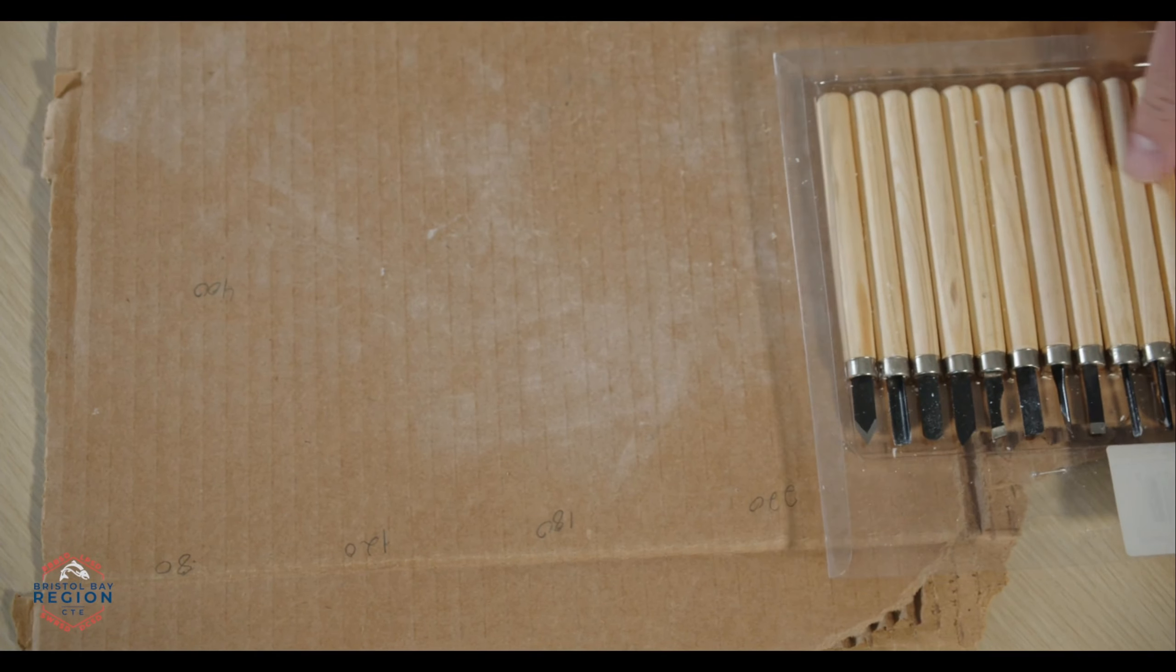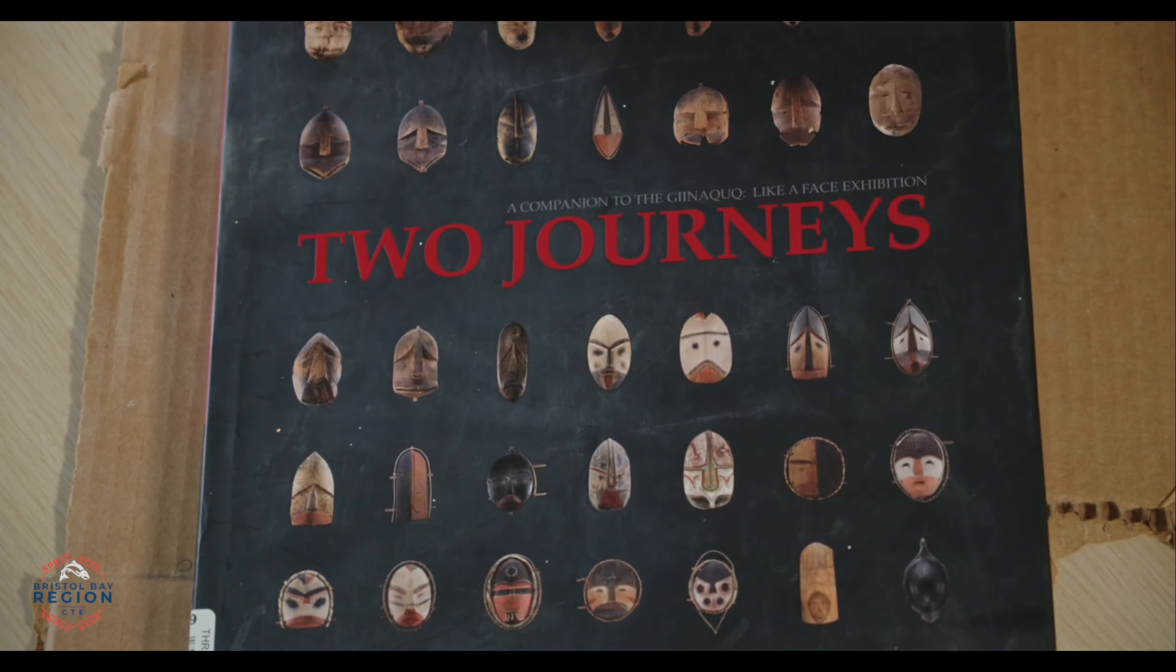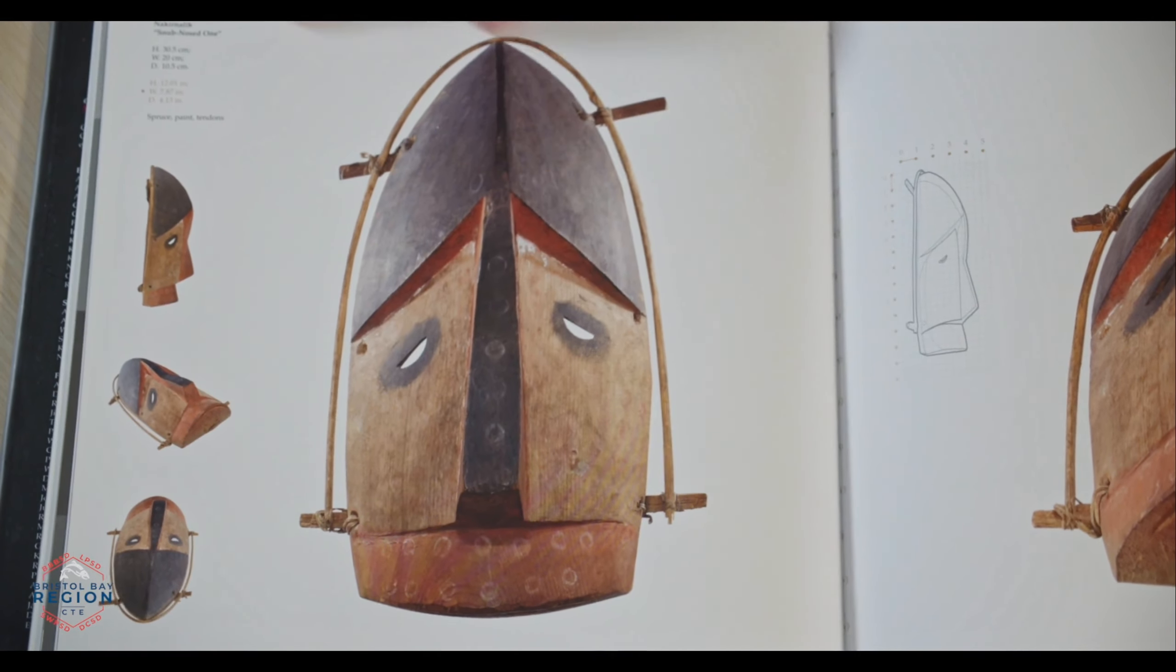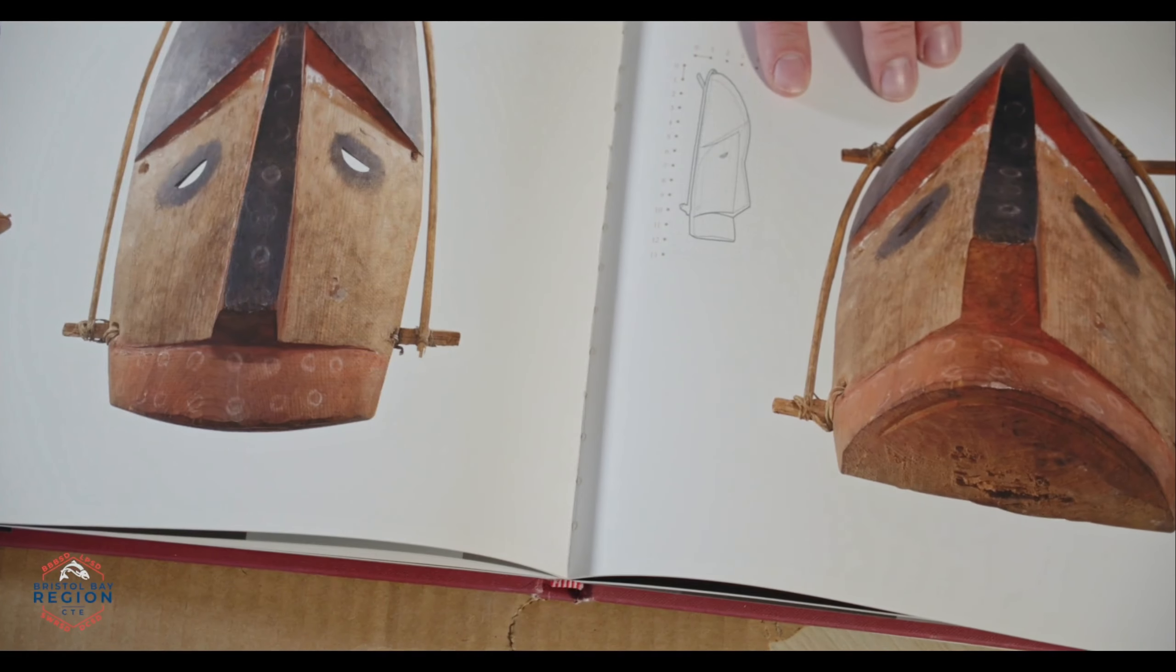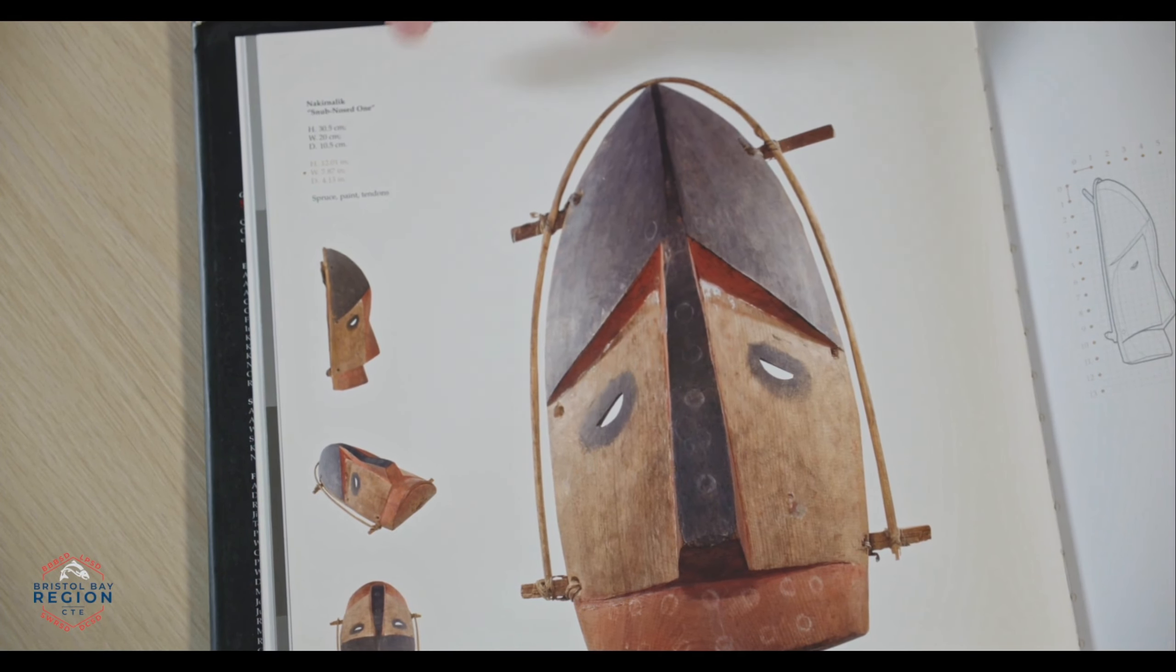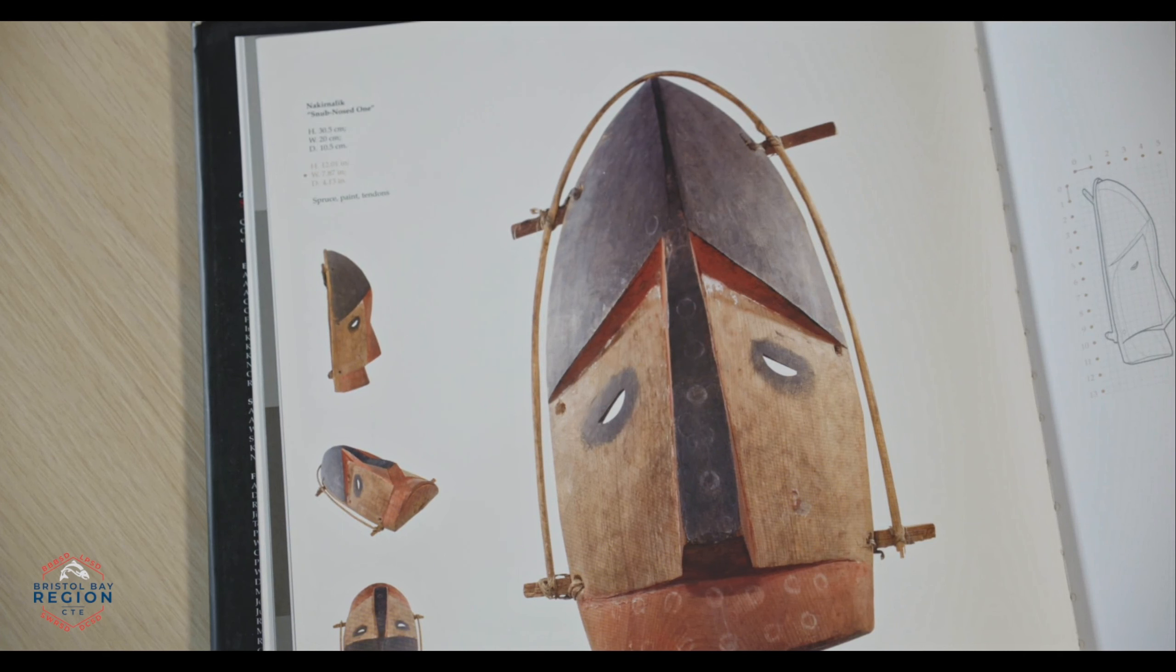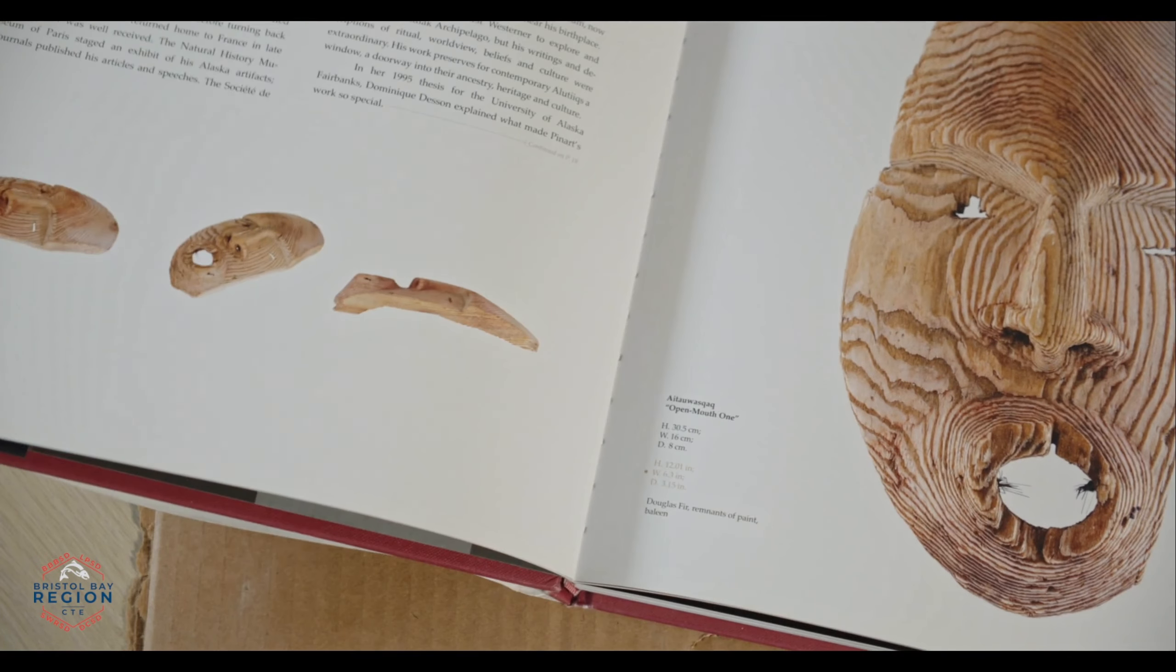This right here is one of the books I'm talking about, this is the book called Two Journeys. This is all the masks that had been brought back to Kodiak. I was showing you the one that I was wanting to make, it is right here in this book. The great thing about this book is it gives you not only the front view, the side view and angle view, but also gives you the dimensions of it. So I know the height and the width and the depth. It really gives you a lot of detail about these full-size masks.